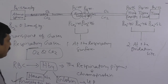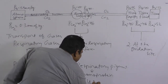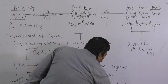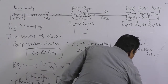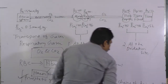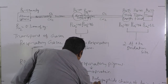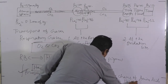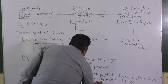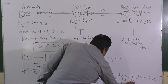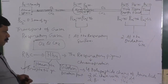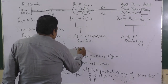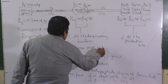The globin protein consists of four polypeptide chains of amino acids: two identical alpha chains with 141 amino acids, and two identical beta chains with 146 amino acids. This is the structure of hemoglobin, with a molecular weight of 68,000.